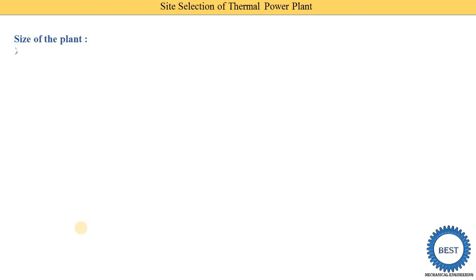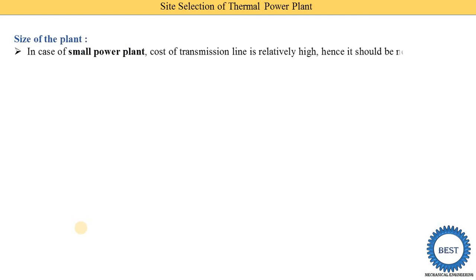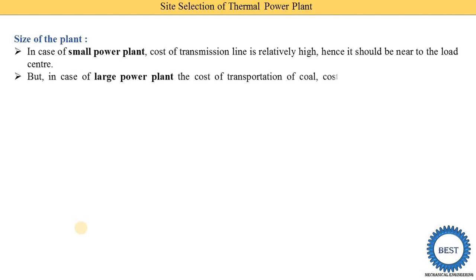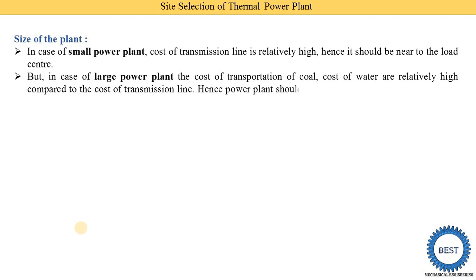Next point is the size of the plant. In the case of a small power plant, the cost of the transmission line is relatively high, so it shall be near the load center — producing low electricity and transferring it over large distances makes cost very high. But in the case of a large power plant, the cost of transportation of coal and cost of water are relatively high compared to the cost of transmission lines. Hence, the large power plant shall be near the coal mines as well as the water source, and long transmission lines can be justified.